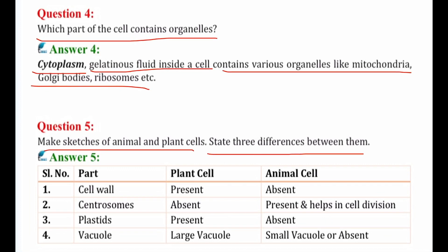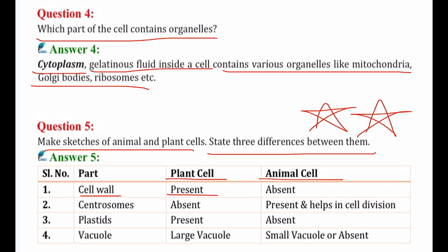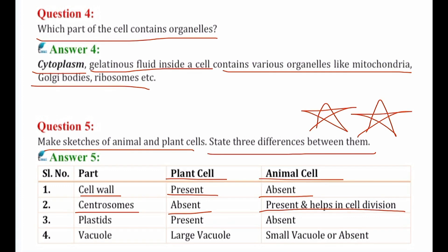Question number 5: make sketches of animal and plant cells and state three differences between them. First, cell wall — present in plant cells, absent in animal cells. Second, centrisome — absent in plant cells, present in animal cells, and it helps in cell division. Third, plastids — present in plant cells, absent in animal cells. Fourth, vacuole — large in plant cells, small or absent in animal cells.